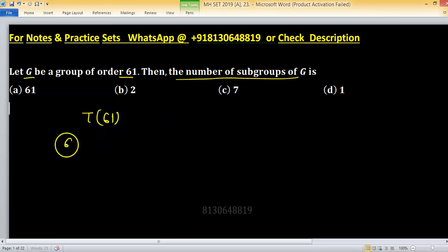So factorize 61. The factors of 61 are 1 and 61. So 61 is a prime number.